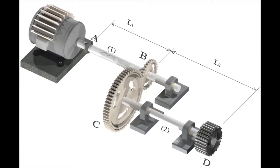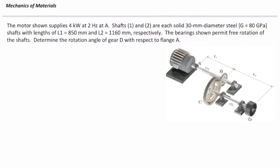I want to quickly solve a problem. The motor shown supplies 4 kW at 2 Hz. Shaft 1 and 2 are each solid 30 mm diameter steel. The length of the first shaft is 850, the length of the second shaft is 1160 mm. The bearing permits free rotation, as we expect to see in all torsional problems. Determine the rotation angle of gear D with respect to flange A. We want to determine how much is the total twist at the right end. Similar to what we discussed, we need to determine torque in each element first. Then we need to determine how much twist in each element.